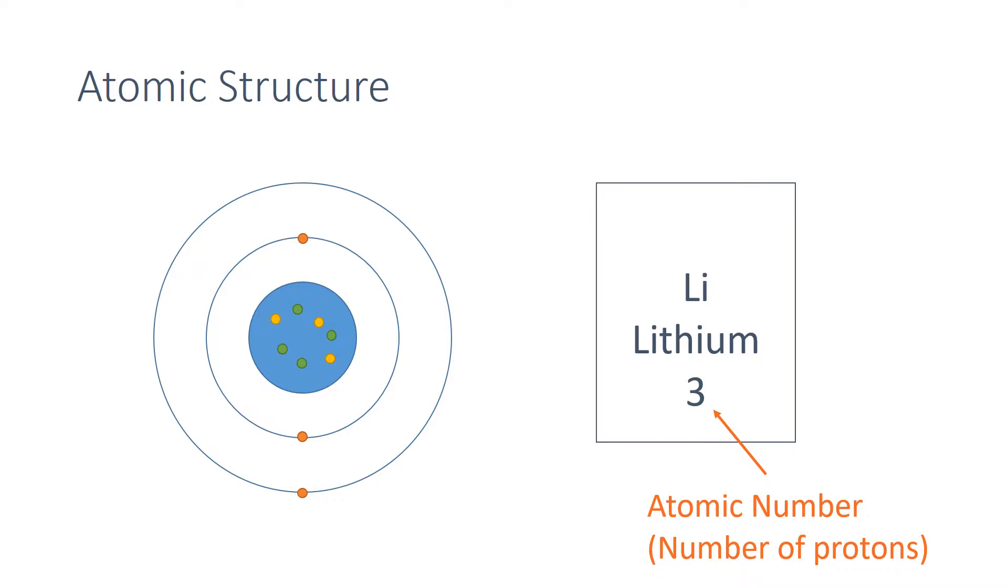When you look at the periodic table, you will see another number above the element name. This is the mass number, and it's the total number of neutrons and protons combined.